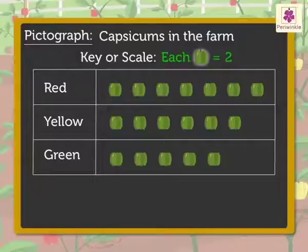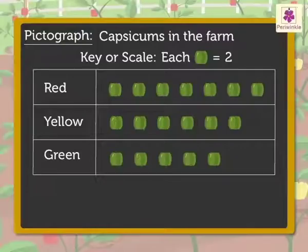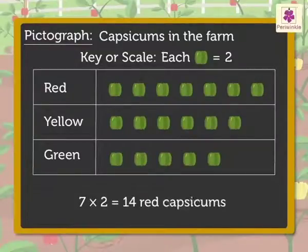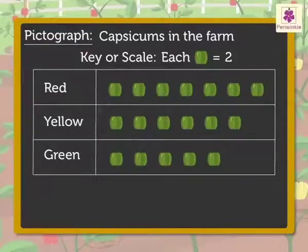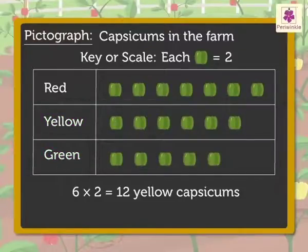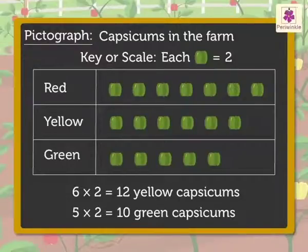The key or scale tells us that each capsicum picture is equal to 2 capsicums. So, let's count the number of capsicums in the farm. There are 7 red capsicum pictures. That means 7 multiplied by 2 is equal to 14 red capsicums. Accordingly, we can find out the yellow and green capsicums. There are 12 yellow and 10 green capsicums on the farm.